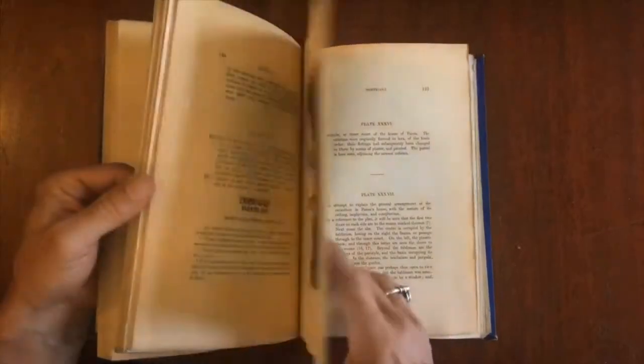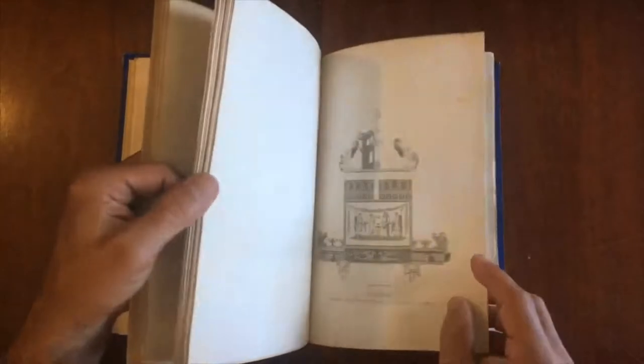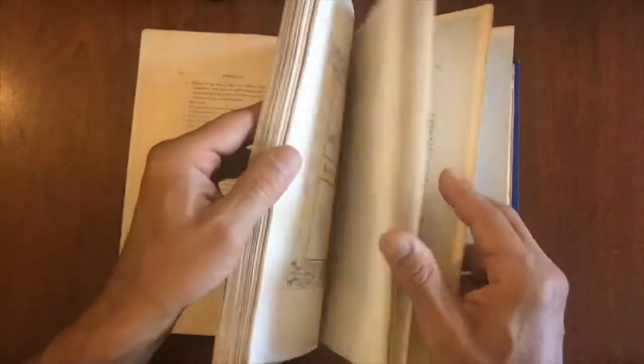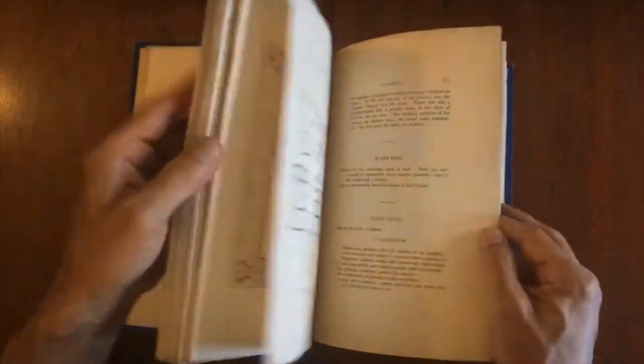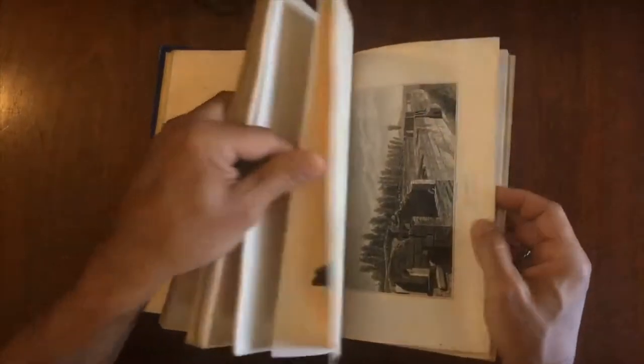All these plates would have been printed separately from engraved plates that were all inked one at a time, and the impression would have been pulled from that plate like so. So it's a monumental amount of labor that lies behind the production of a plate book like this.